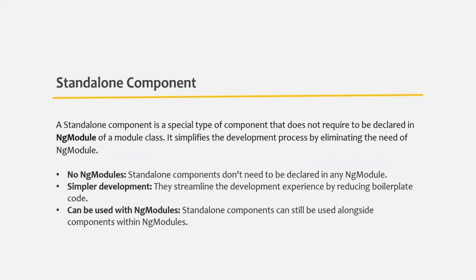In Angular, a standalone component is a special type of component that does not require to be declared in an NgModule of a module class. As we have seen so far, when we create a component in Angular, we need to declare them within an NgModule in order for them to work. Standalone components, introduced in Angular version 14, basically simplify the development process by eliminating the need for NgModules — the module class. This makes it easier to create and use components without worrying about declaring them somewhere. Standalone components don't need to be declared in any NgModule, and they streamline the development experience by reducing boilerplate code.